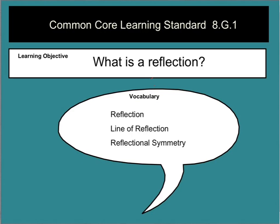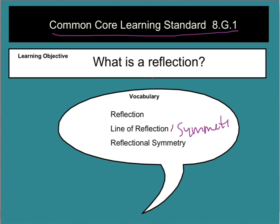Today's lesson is the second lesson on transformation, and we're going to cover reflections today. Our learning objective is to answer the question: what is a reflection? We're covering Common Core Learning Standard 8G1. The vocabulary includes reflection, line of reflection — sometimes called line of symmetry — and reflexional symmetry.